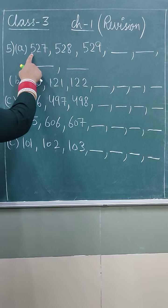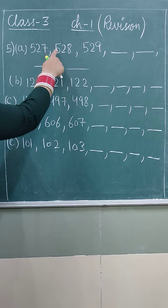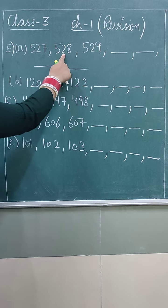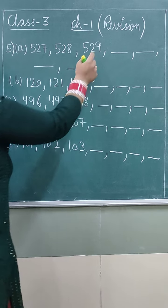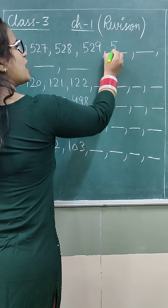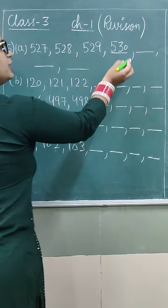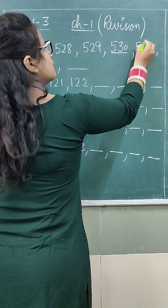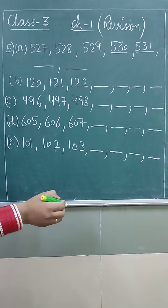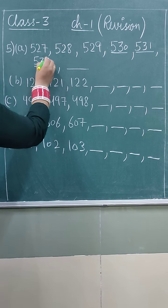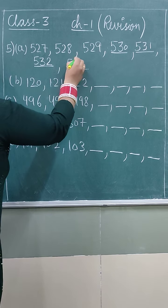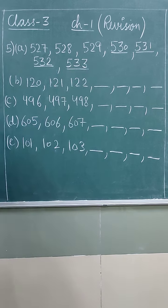So how we will complete it? This is 527, 528, 529. After this we have 530, then we have 531, then we have 532, 533.